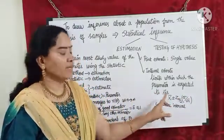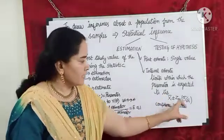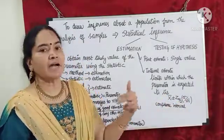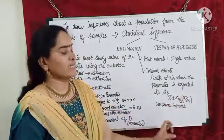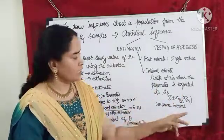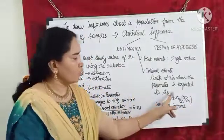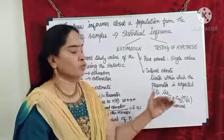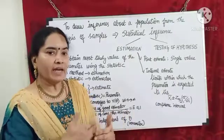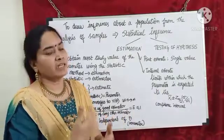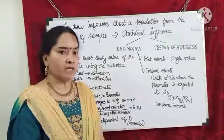x̄ is the sample mean; σ/√n is the standard error of mean, where σ is the population standard deviation and n is the sample size. When we do problems we will see the detail. There are various confidence limits given in our syllabus, so you can refer to your textbook.